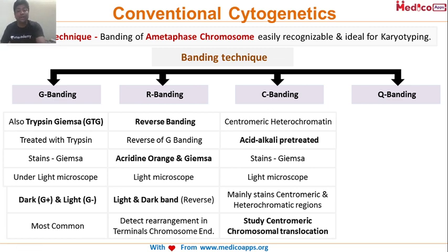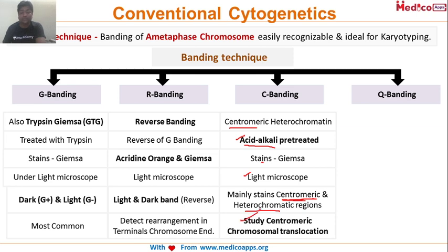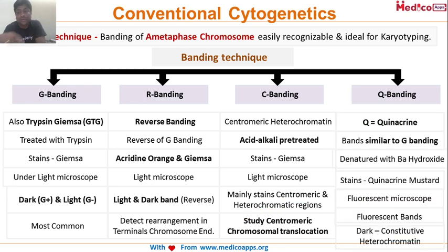The third banding technique is C banding, also called centromeric banding. Here the stain remains the same but the pre-treatment is with an acid-alkali mixture. The microscope is the same, but this technique stains the centromeric and heterochromatic regions, making it important for studying centromeric regions and chromosomal translocations.